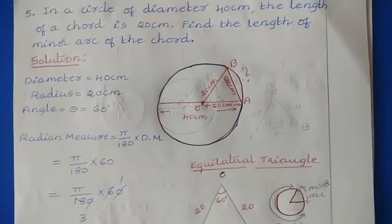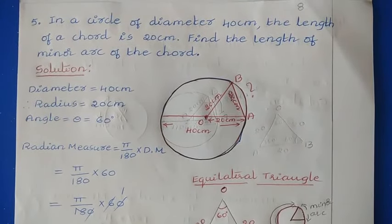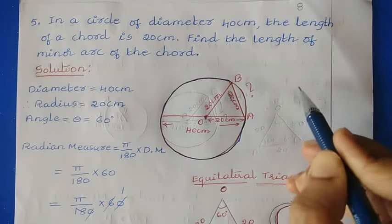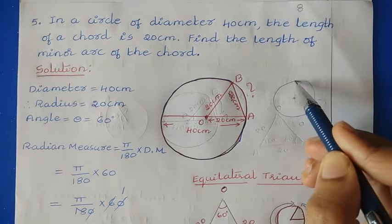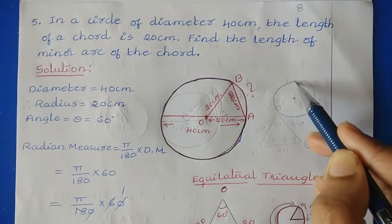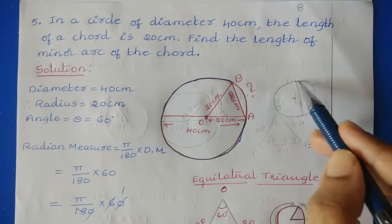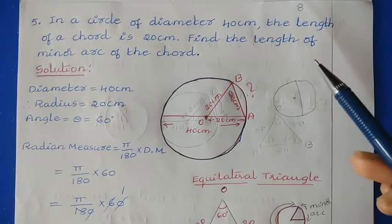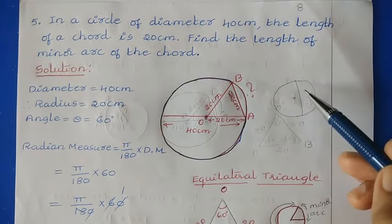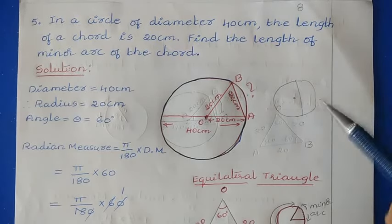Next, we discuss question 5: in a circle of diameter 40 cm, the length of a chord is 20 cm — find the length of the minor arc of the chord. A chord means: if you have two points on a circle and a line joins those two points, that line is called a chord.